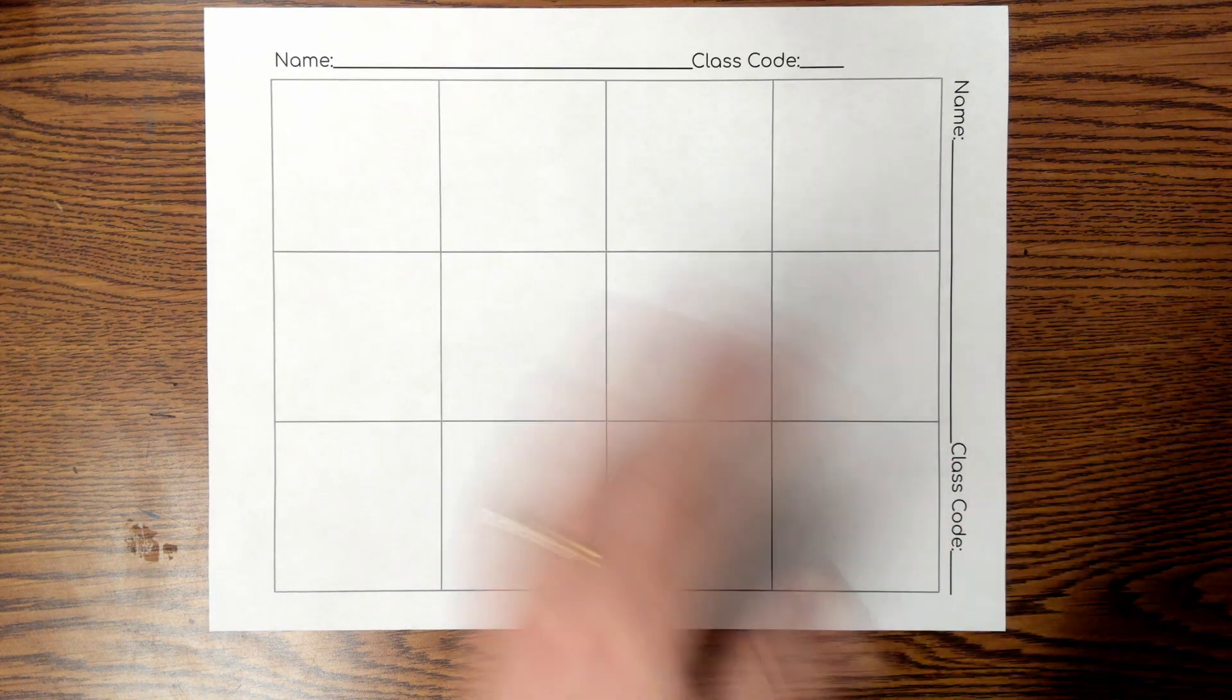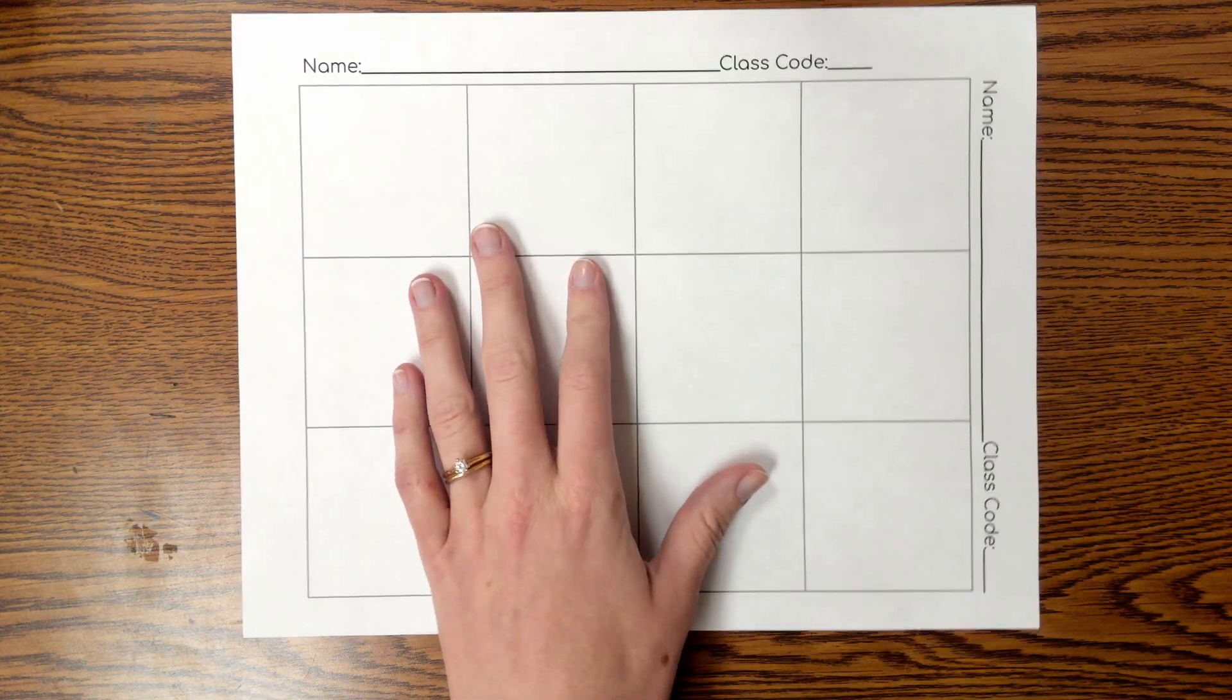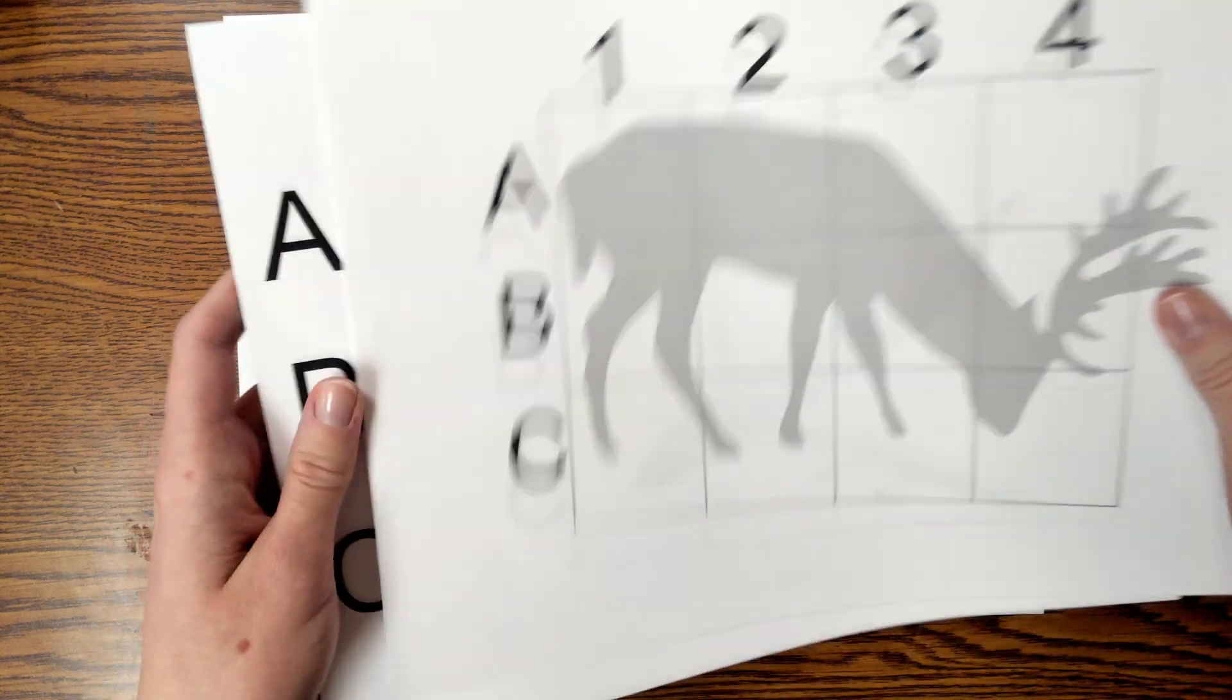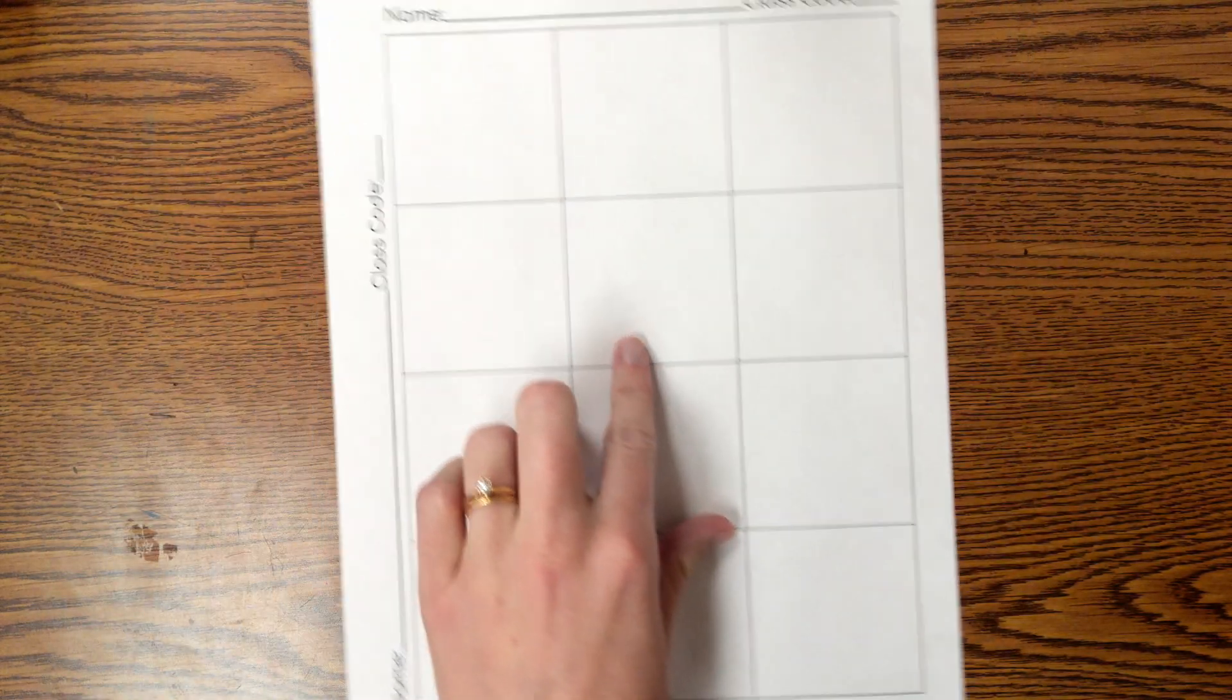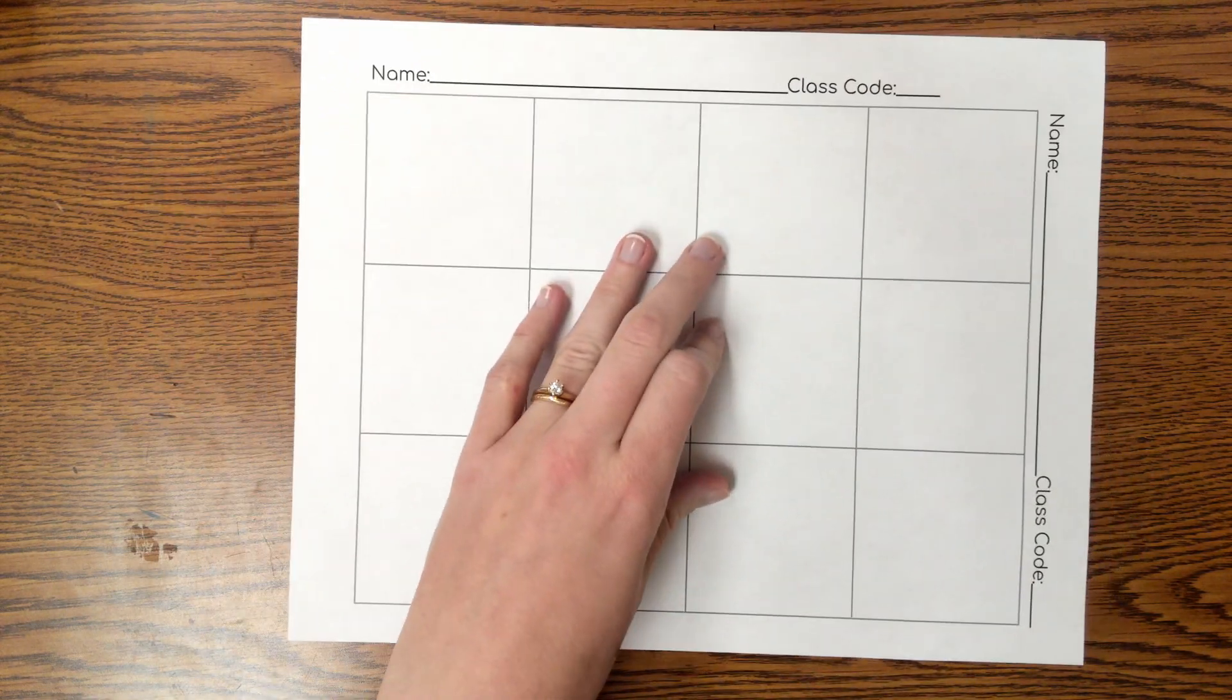Today we'll be starting a grid drawing. You'll need a paper like this. Most of the options that you can choose to draw are pictures that are horizontal, but there's one that is vertical, so make sure you turn your paper the correct way to get started.